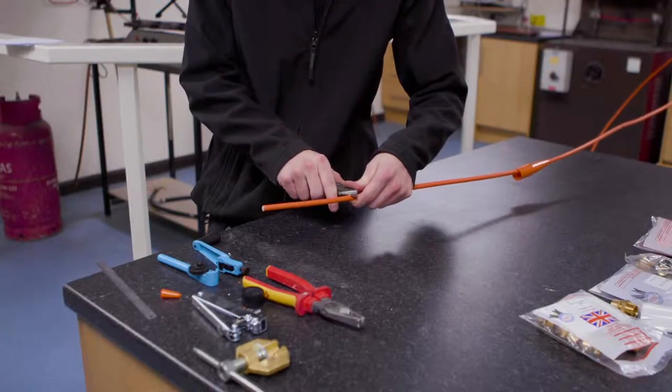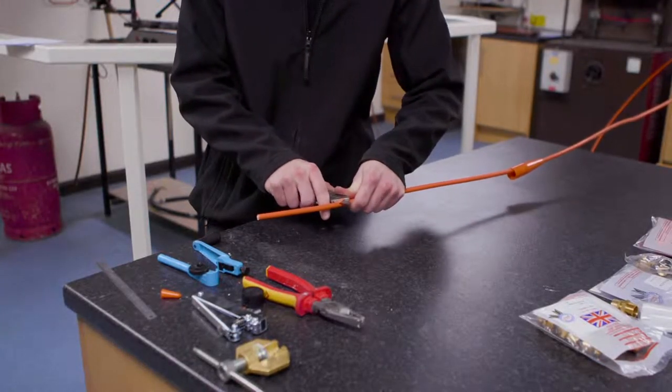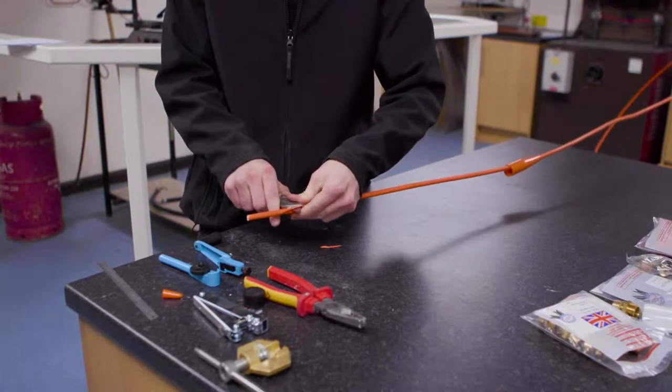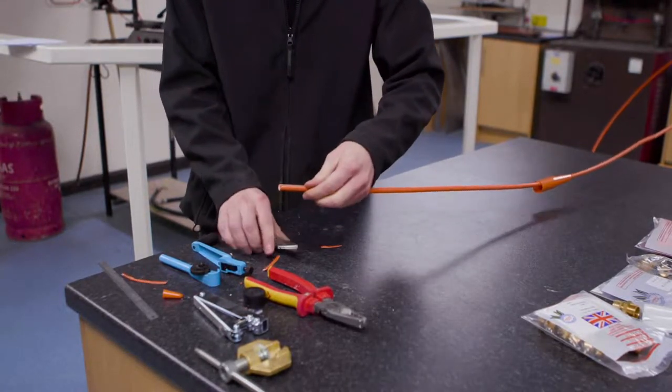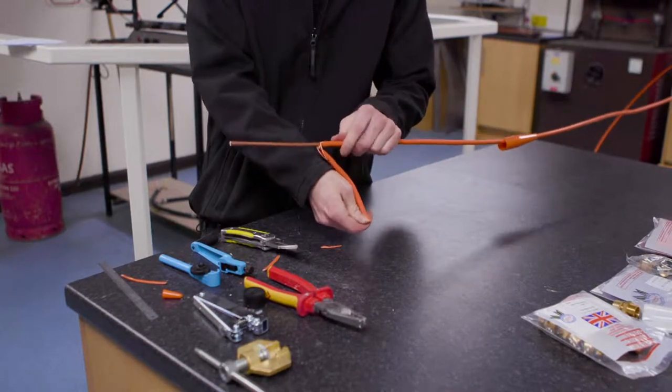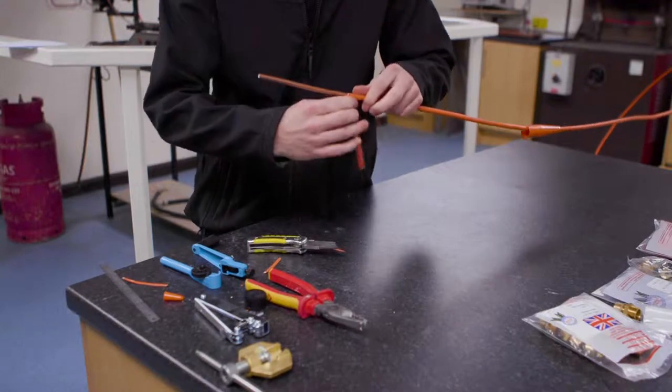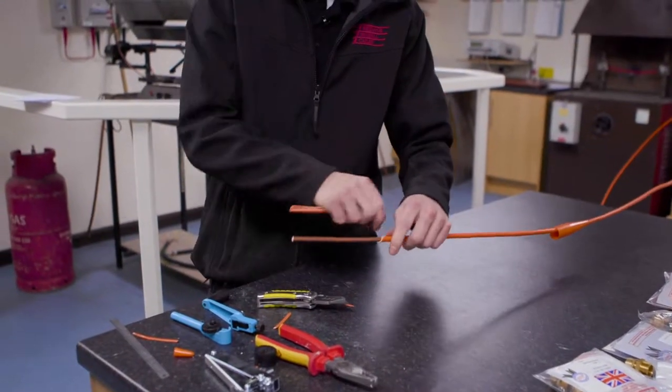Strip that back away from you making sure you don't nick any of the copper cable. Pull it away from you and again cutting away from you, just nip the outer sheath and pull it off.